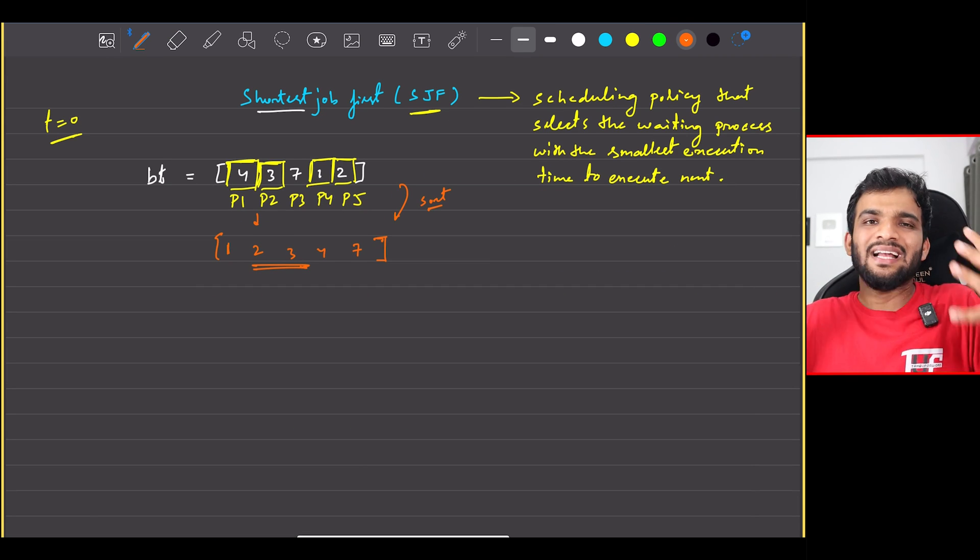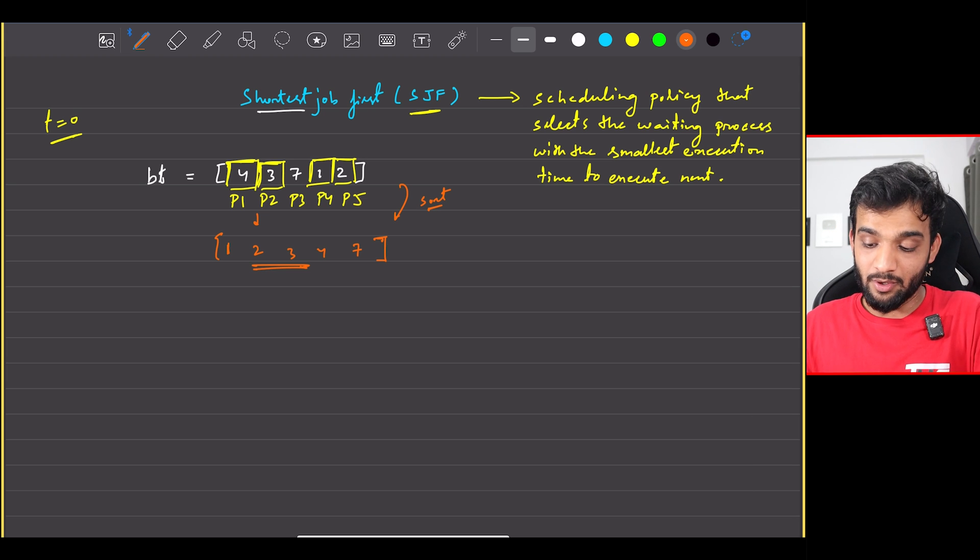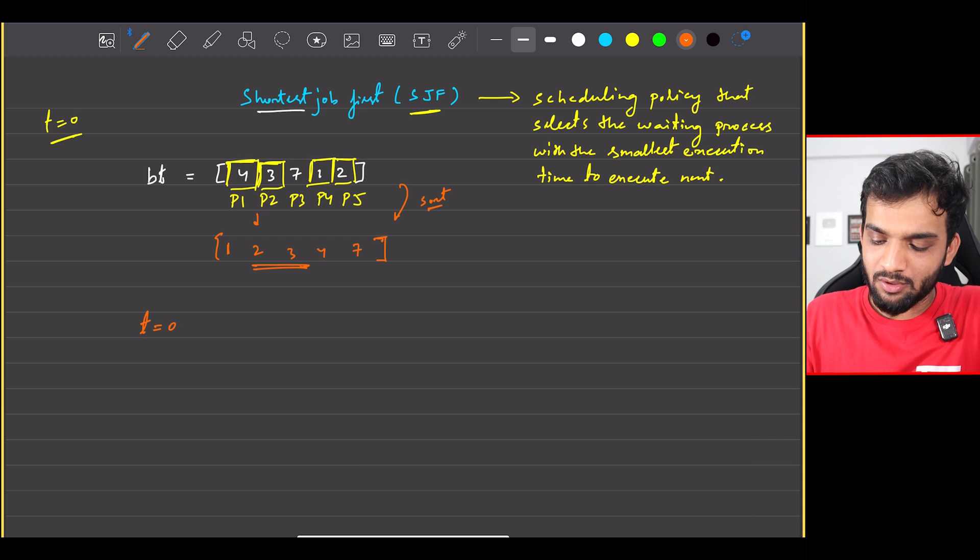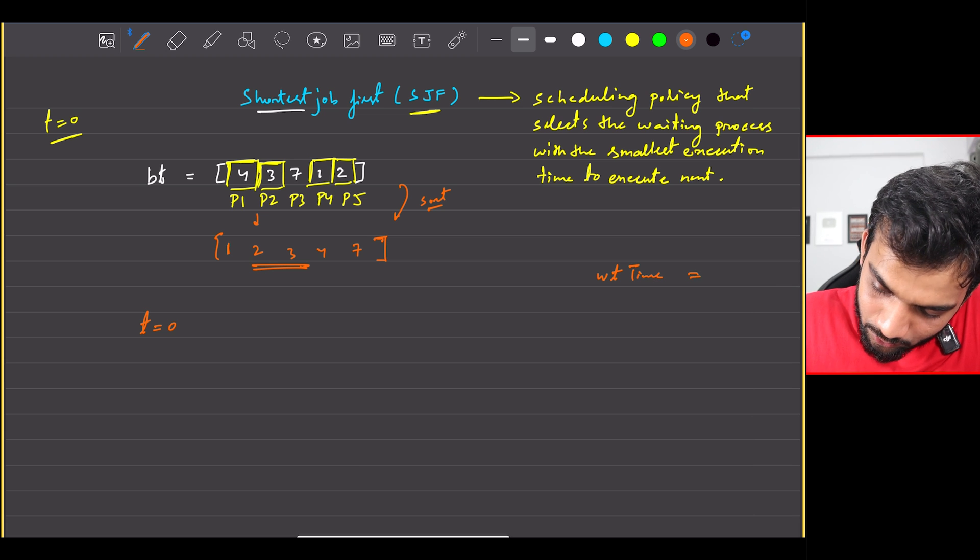Okay, so let's take a timer equal to 0 and let's take a waiting time. So let's compute the waiting time to be initially 0.